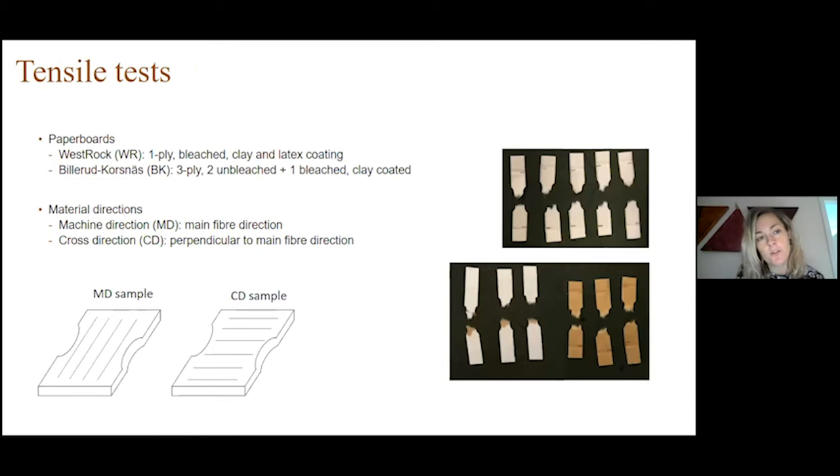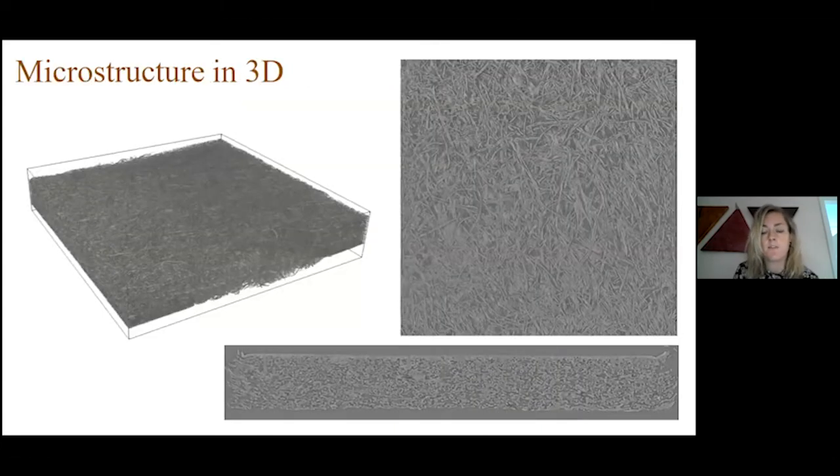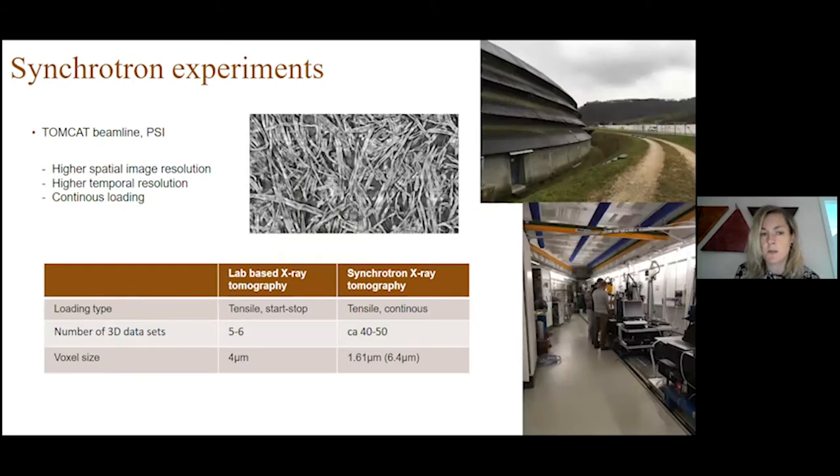In this presentation, I will show some results from tensile testing. We have tested two types of paperboards, one single ply paperboard called Westrock and a 3 ply paperboard from Billerud Korsnäs. We have sampled these in the machine direction, which is along the main fiber direction, and the cross direction. The main experimental approach we use is to do tensile testing in situ and combine them with X-ray tomography experiments. From the X-ray tomography, we obtain the microstructure in 3D so we can see the fiber network structure and how it changed during loading.